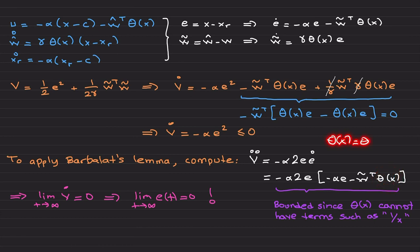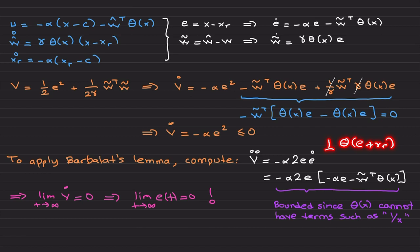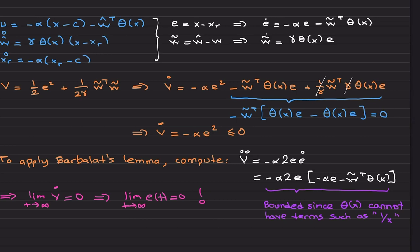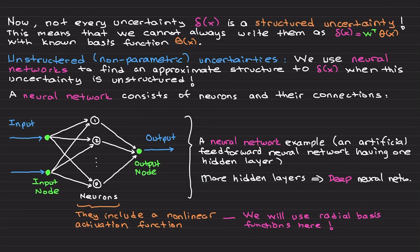Lyapunov stability means v, e, and w-tilde are bounded — so these terms are bounded. For theta of x: since theta is piecewise continuous and doesn't include terms like one-over-x, and since x-r and e are both bounded, theta itself is bounded. This is where we use the piecewise continuity property of theta. We know from Barbalat's lemma that v-dot goes to zero as t goes to infinity, and the error goes to zero — we recover asymptotic convergence.